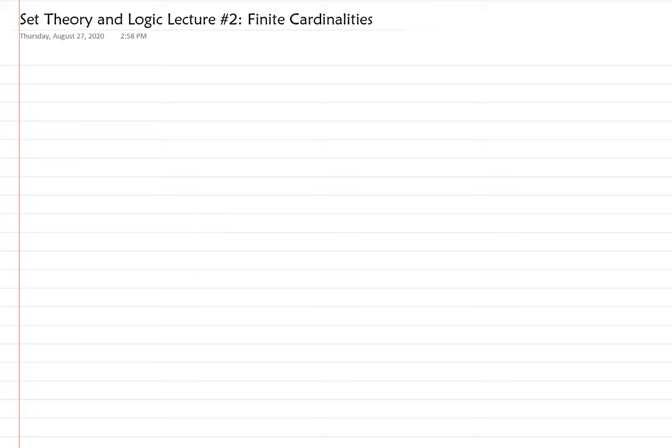Lecture two — we're going to talk more about finite cardinalities. Cardinality is a measurement of how many elements are in a set. You might say you just count how many things are in the set, and that is completely true, unless there are infinitely many things in the set. We're only doing finite cardinalities today, so you can simply count how many things are there — that's the cardinality.